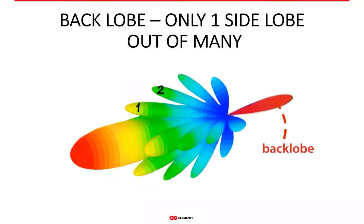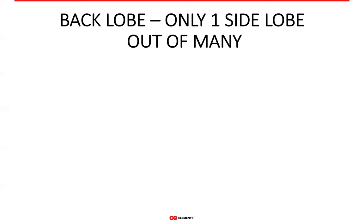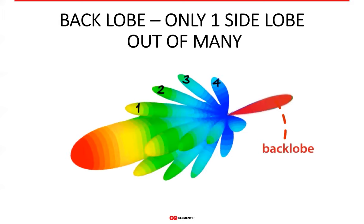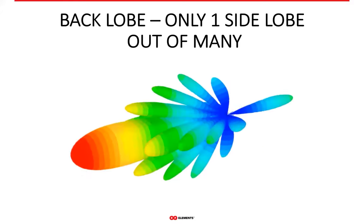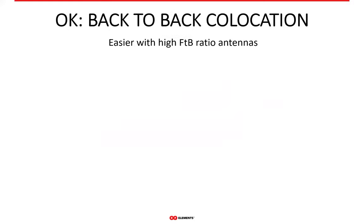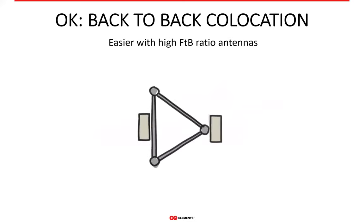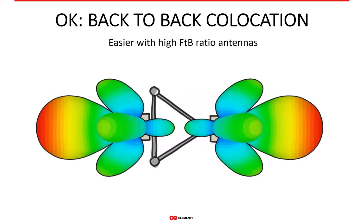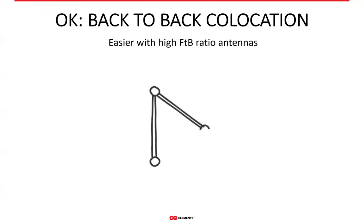Nevertheless, the back lobe is only one of many side lobes that antennas used in WISP networks typically have. So if the back lobe is just one out of many side lobes, it's probably not so important. This is the typical error in interpretation of front-to-back ratio: it doesn't say anything about the rest of the side lobes — it just considers that one back lobe. And when two antennas are exactly back-to-back, which, let's be honest, is a rare scenario, high front-to-back ratio can help decrease the interference level.